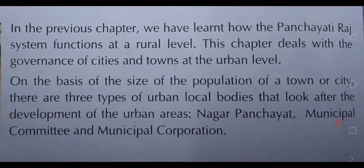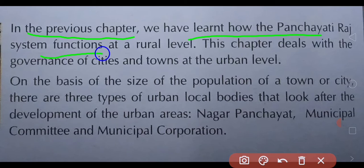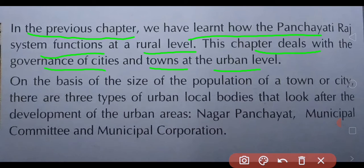In the previous chapter we learnt how the Panchayat Raj system functions at the rural level — how it works in the village areas. In this chapter we will study what is the governance of cities and towns at the urban level. On the basis of the size of the population of a town or city, there are three types of urban local bodies.